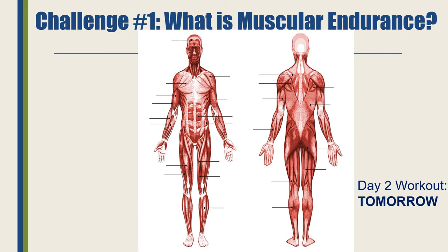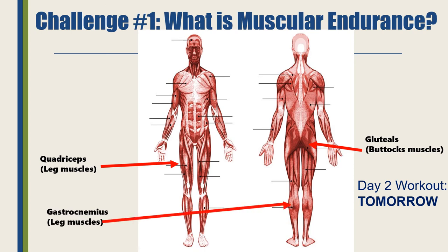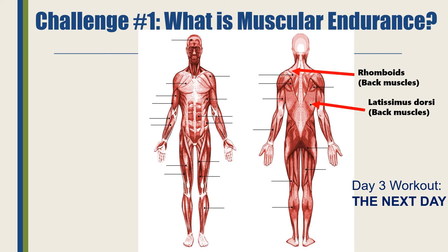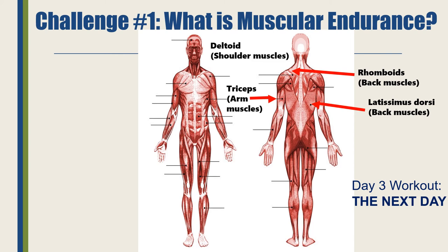Tomorrow, day two workout is going to focus on your glutes, your quads or quadriceps which are your leg muscles, and gastrocnemius which are your calves — basically a lower body workout tomorrow. Then the next day, day three, you're going to work on your upper body again: the latissimus dorsi which is your back muscles, rhomboids which are also your back muscles, triceps which are your arm muscles on the back side of your biceps, and your deltoid which is your shoulder muscles.